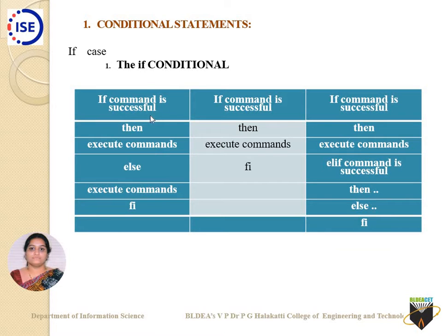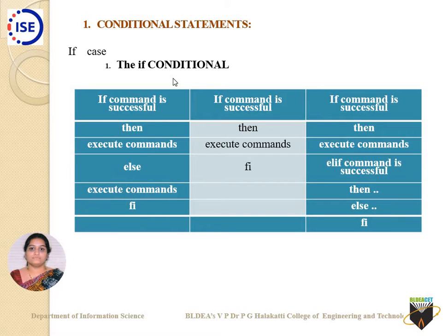You can see here: if a command is successful, then execute these commands; else execute another series of commands. In shell scripts, whenever you use if, you must end it with its reverse — that is 'fi'. There is also a simple form without else: if the command is successful, then execute commands, then end with fi. For nested conditions, use elif — that is, else if.